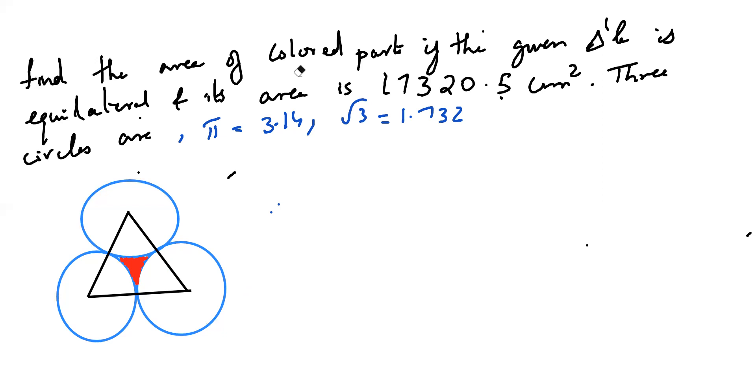And the given ABC is an equilateral triangle here. The given triangle is equilateral. So first I have to write solutions here.